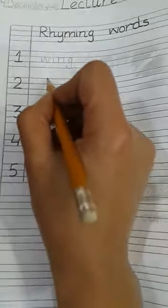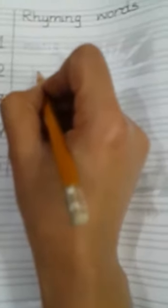We are going to write rhyming words. W-I-N-G, wing. Okay. K-I-N-G, king.